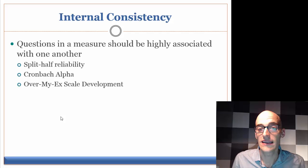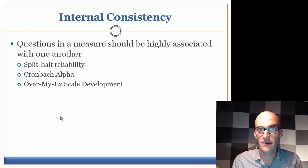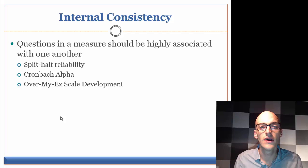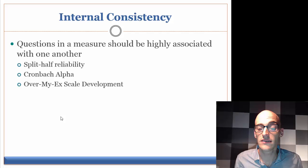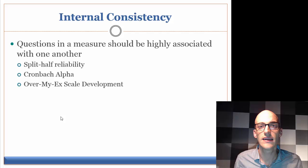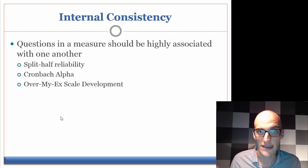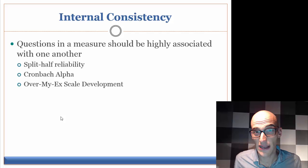Another way to assess reliability is internal consistency, which looks at how reliable the measure was within itself rather than comparing time one to time two. One way is split-half reliability — for instance, in a measure of life satisfaction, if somebody scored really high in the first half of the items, they should also score high on life satisfaction in the second half of the measurement.